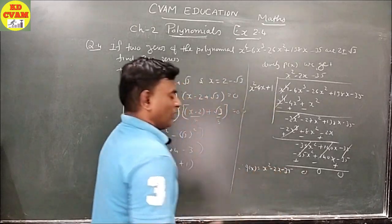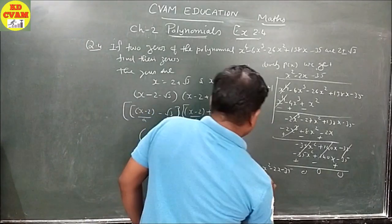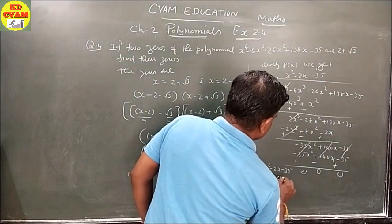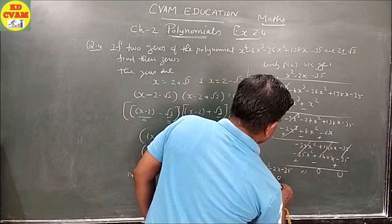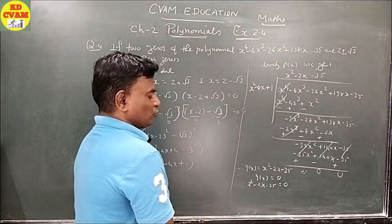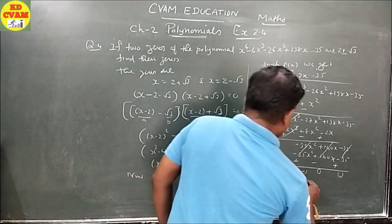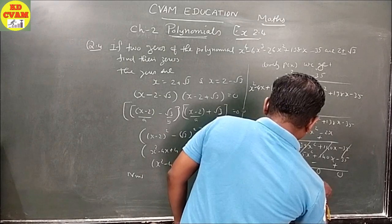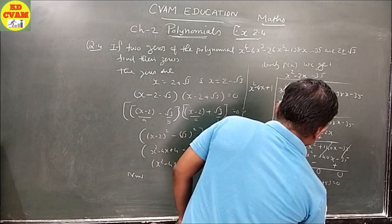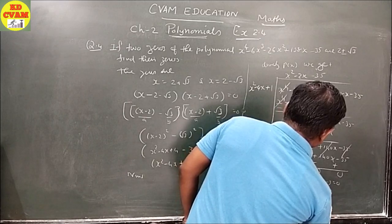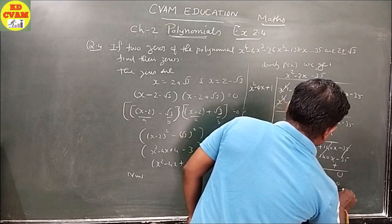Therefore Q(X) = x² - 2x - 35. Setting Q(X) = 0: x² - 2x - 35 = 0. Factoring: (x - 7)(x + 5) = 0. So x = 7 or x = -5. Therefore the other zeros are 7 and -5.